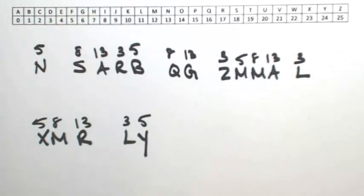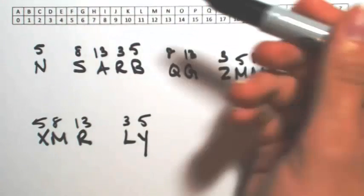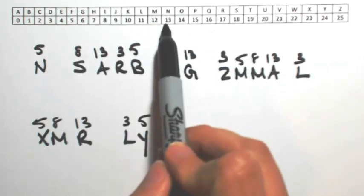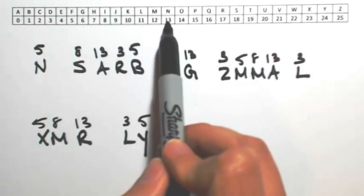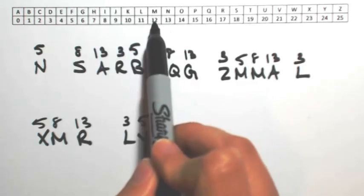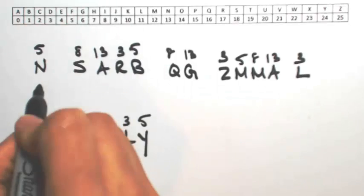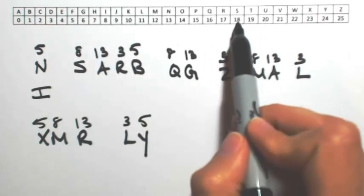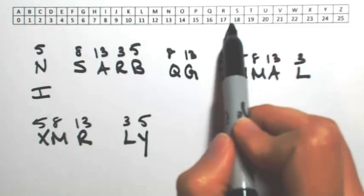So keep in mind it's already been encrypted, so to decrypt, I need to go back to where it came from. So the N was shifted by 5, so I'm going to shift it back 5, so 13 minus 5 is 8. So that's an I. The F was shifted by 8, so 18 minus 8 is 10.